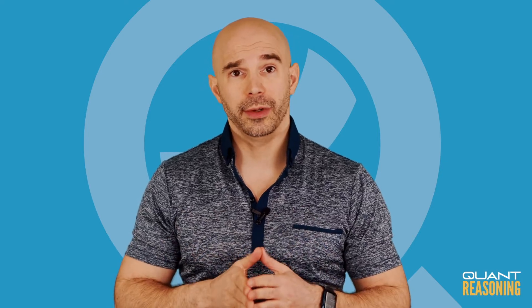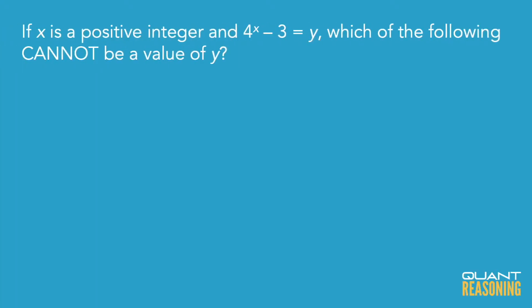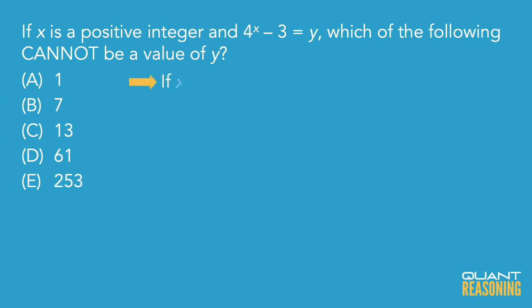For the easy solution, we're told that x is some positive integer, so we can immediately start thinking of 1, 2, 3, 4, 5 for x, and then go ahead and execute that and see which of the answer choices doesn't work out. So if x is 1, then 4 to the power of x is 4. Subtracting the 3, I get 1, and that's answer choice A. So answer choice A is possible.